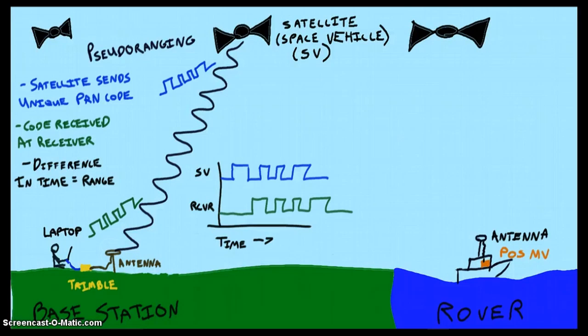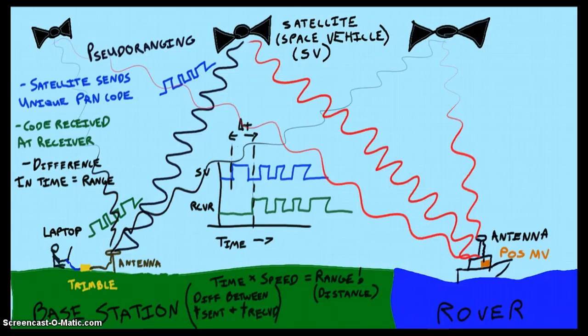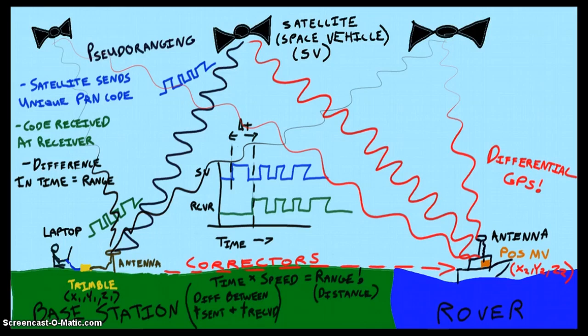If you get two GPS receivers, a base station and a rover, close enough to see the same satellites, you can log data on both through the same time period and calculate their differences in position. With each receiver seeing the same satellite, you can also determine the errors in your measurements and cancel them out through a process we call differential GPS.